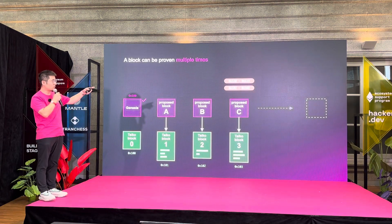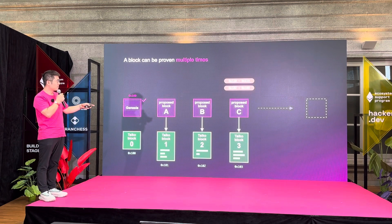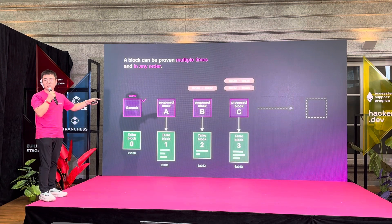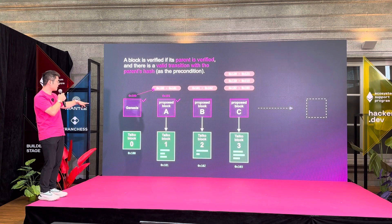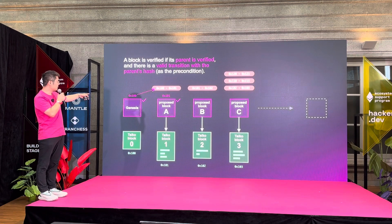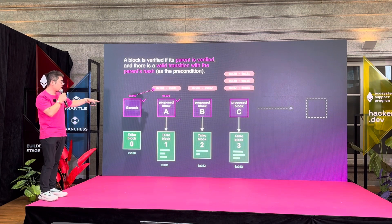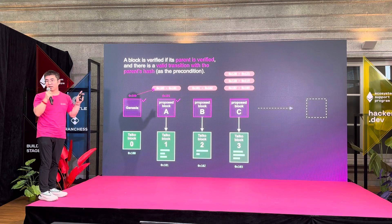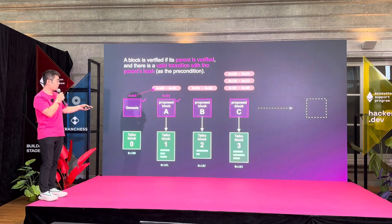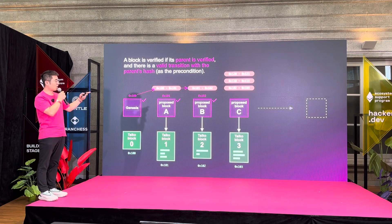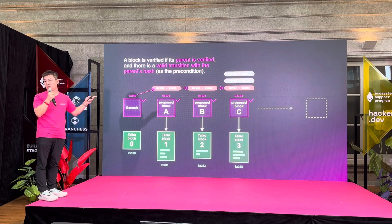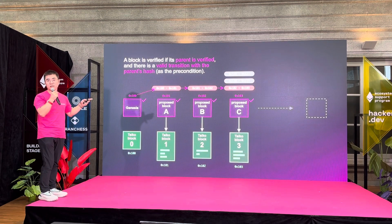Let's say two provers prove the third block one after another, and then another prover proves the second block. So the proving can be out of order — in any order. Now the first one gets proved. This first prover connects the dots from the genesis block to the first block. Block one gets verified. By verified, I mean now on layer one, all the smart contracts can trust that on layer two, the block hash for the first block is correct. We keep connecting the dots and each block will be verified in order. Block verification is in order, but proving can be out of order.